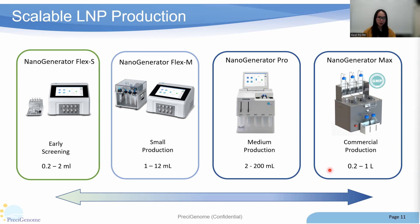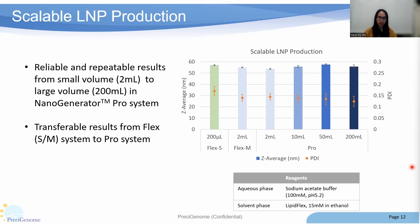PC Genome also provides a mass version for commercial production. With the most advanced microfluidic technology, PC Genome can provide a reliable scale-up solution for customers. We use different platforms to synthesize lipid nanoparticles — for example, 200 µL on Flex S, 2 mL on Flex M, or 2 to 200 mL on Pro. Results from all platforms are highly consistent with each other. Customers can seamlessly transfer their early screening results to large-scale production using PC Genome's Nanogenerator System.